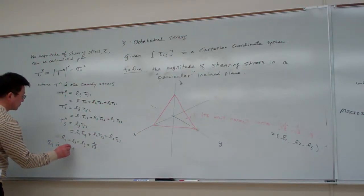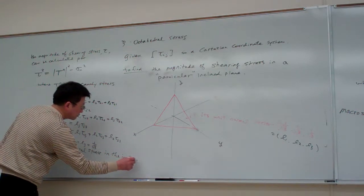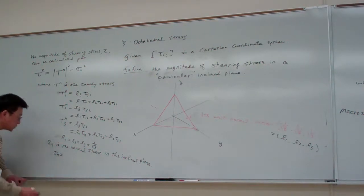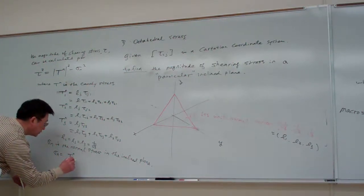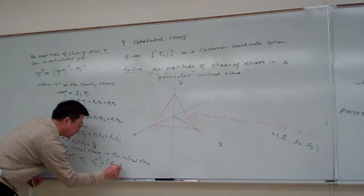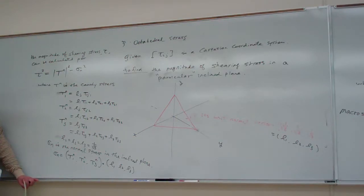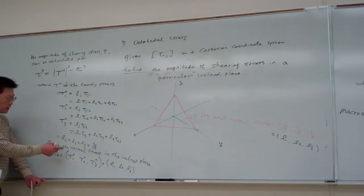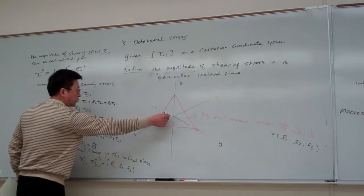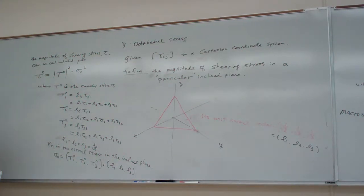σn is the normal stress in the inclined plane. The calculation of σn is simply equal to Tn1, Tn2, and Tn3 projected into the n direction — that is, the inner product with these vectors. σn is the normal stress in the inclined plane, meaning it simply projects the Cauchy stress components into the n direction.